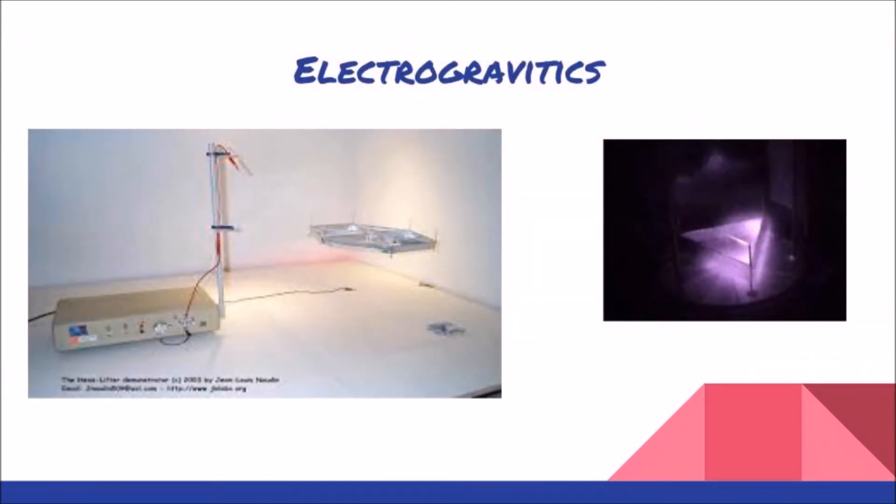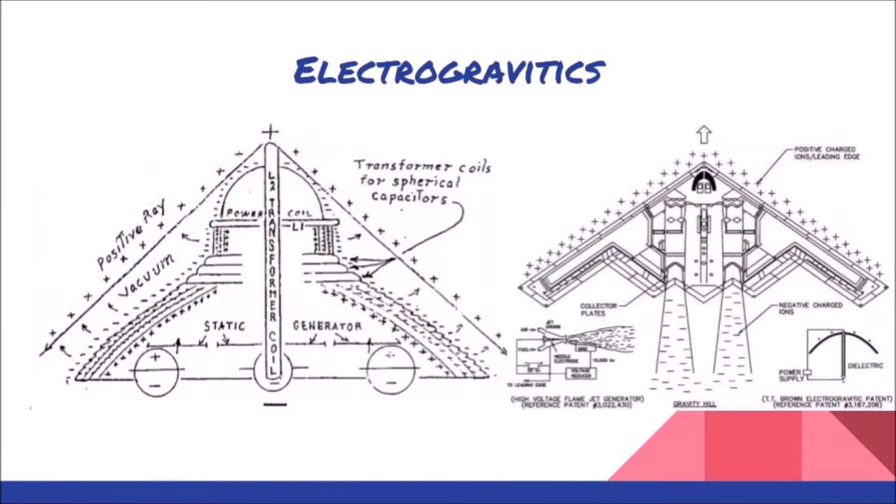Here's a few pictures of some lifter models using electrogravitics. On the left, you can see it levitating. On the right, you can see the corona, and that will change colors due to the energy density or the frequency. Here's some prints showing the charge creating ion wind or gravity waves.